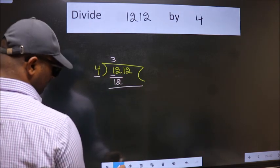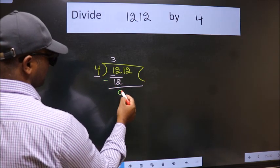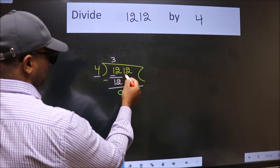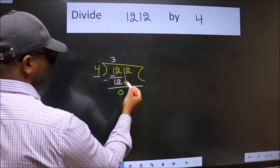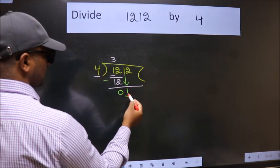Now we should subtract. We get 0. After this bring down the beside number. So 1 down. Now here we have 1.